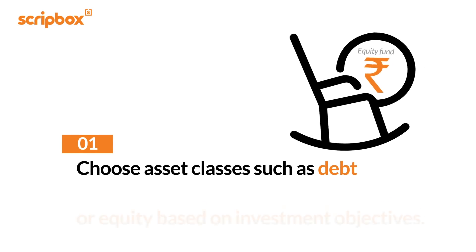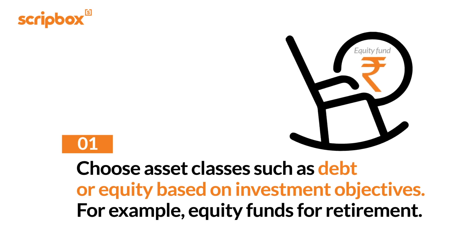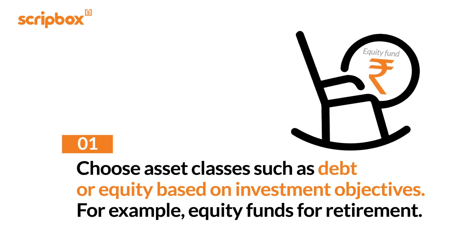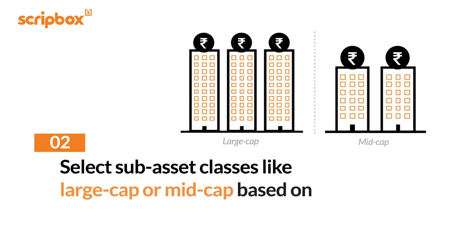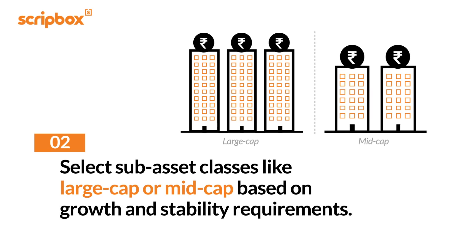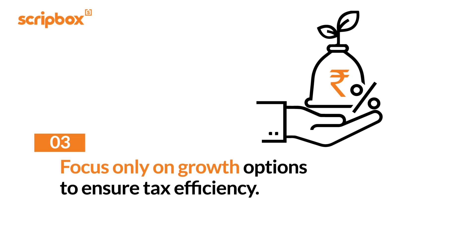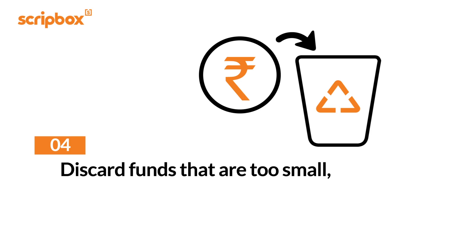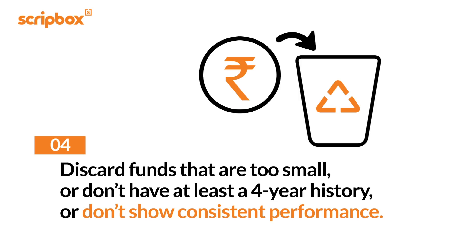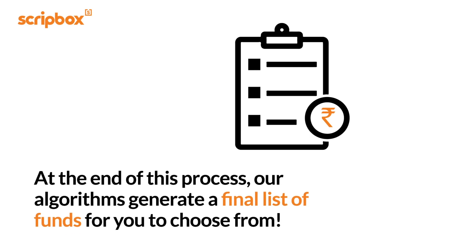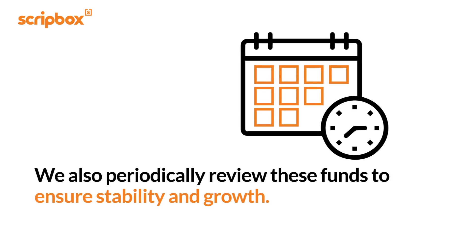Choose asset classes such as debt or equity based on your investment objectives — so if your goal is to retire after 10 years, then the algorithms choose equity as the asset class. Select sub-asset classes like large cap or mid cap based on growth and stability requirements. Focus only on growth options to ensure tax efficiency. Discard funds that are too small, don't have at least a four-year history, or don't show consistent performance. Our algorithms then generate a final list of funds you can choose from, and we also periodically review these funds to ensure stability and growth.